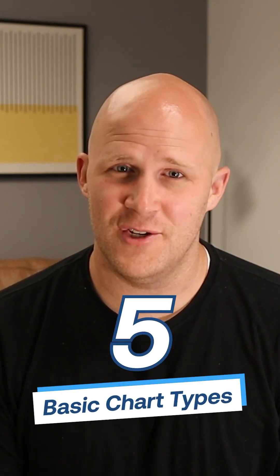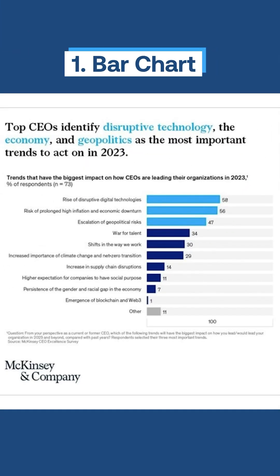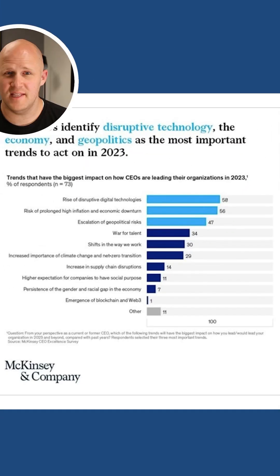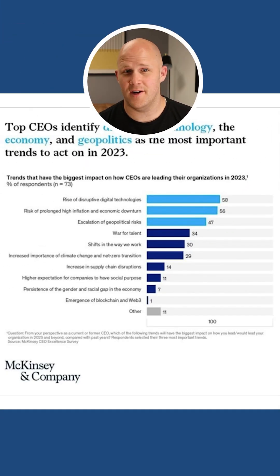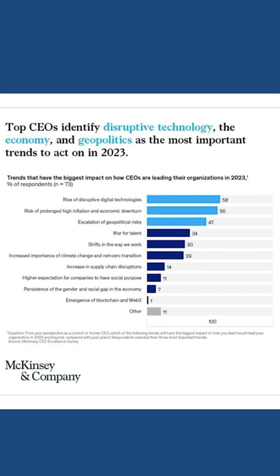If you want to get really good at data visualization, just learn when to use these five basic chart types. Bar chart is good for comparing categories against each other. That's because the lengths of the bars themselves are really easy to compare.